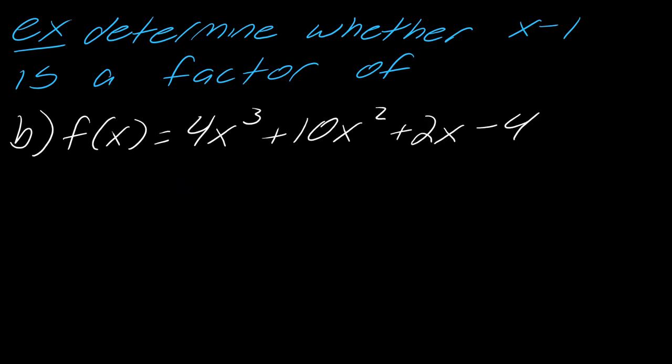Now, let's compare that to the next example. And I would actually challenge you to pause the video here and try this one on your own just to make sure that you understand it and then hit play when you're ready. So I've got my 1 here. I'm going to write everything again in descending order. 4, 10, 2, and negative 4.